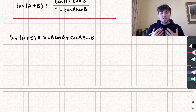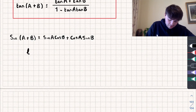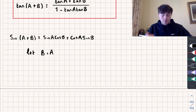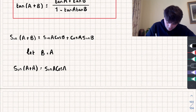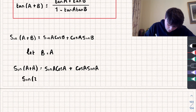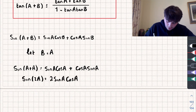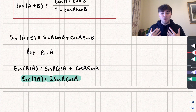All I'm going to do is replace b with a, so wherever there's a b, that is now equal to a. Substituting that in, we get sine of a plus a, which is equal to sine a times cosine a plus cosine a times sine a. Simplifying this, we get that sine of 2a is equal to 2 times sine a times cosine a, and that is our first double angle formula.